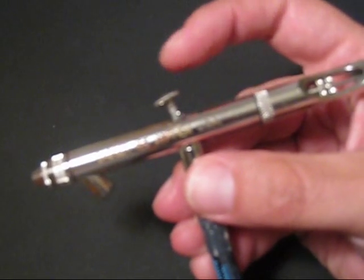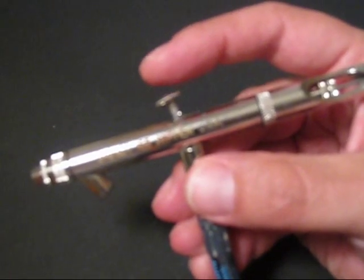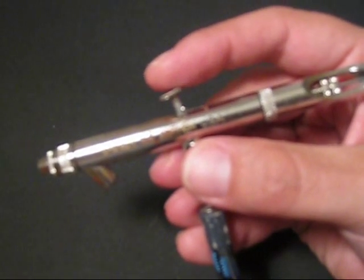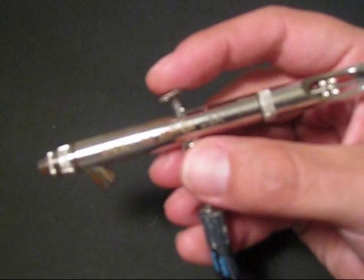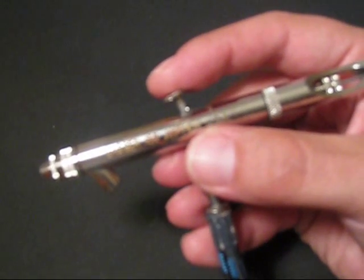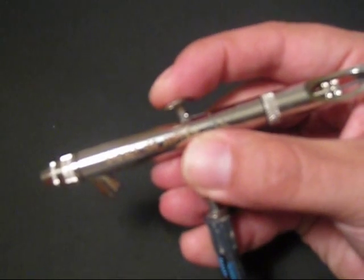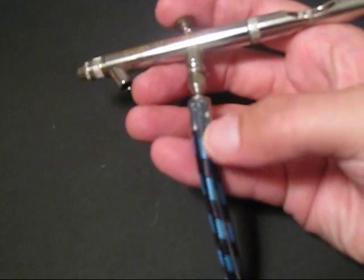The term dual-action may be confusing for some folks. What that basically means is that the airbrush performs two functions. The first being pressing in on the trigger here to release air. That comes through the air hose, which is attached to the bottom.